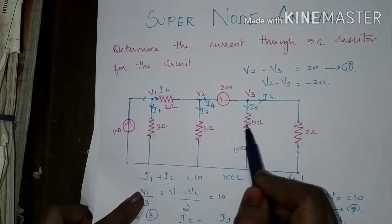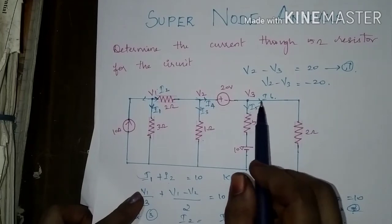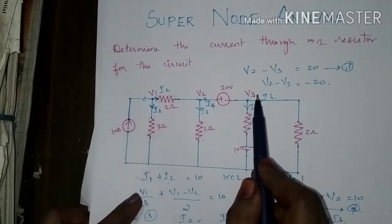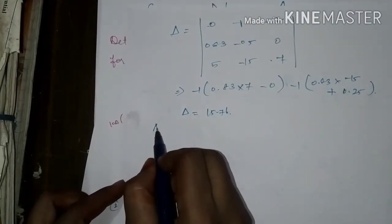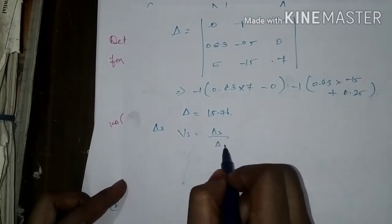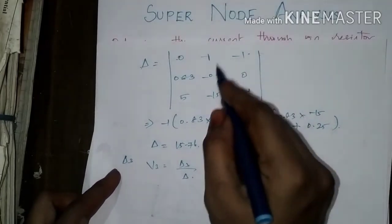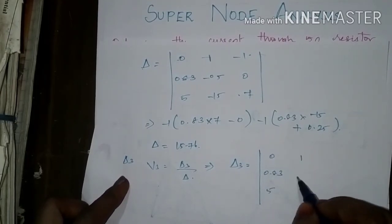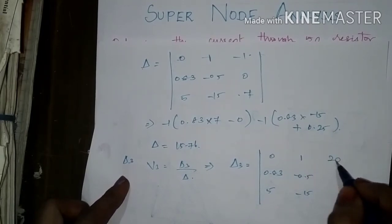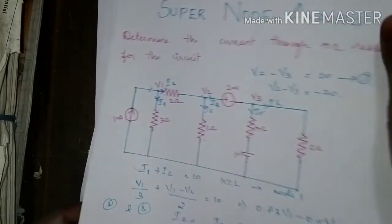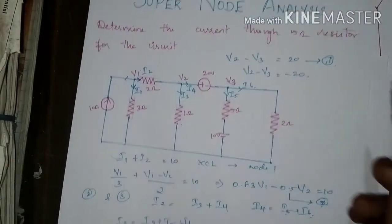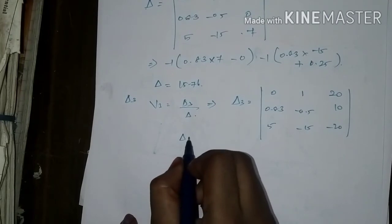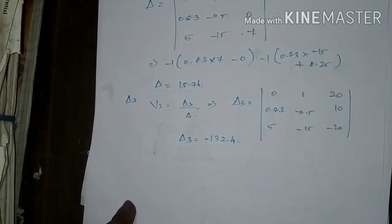They have asked for the current through the 5 ohm resistor, which requires finding V3. V3 is found as delta 3 divided by delta. Delta 3 is found by replacing the third column with the right-hand side values — 20, 10, and minus 20. Expanding this matrix gives delta 3 as minus 132.4. So V3 equals minus 132.4 divided by 15.76, which gives minus 8.4 volts.